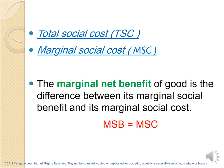The marginal net benefit is the difference between marginal social benefit and marginal social cost, and it must equal zero — which means marginal social benefit equals marginal social cost. When this condition holds, we are at the efficient point.